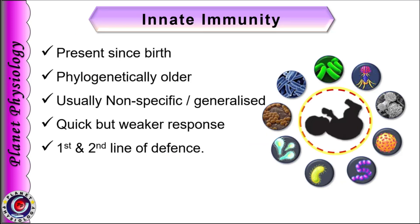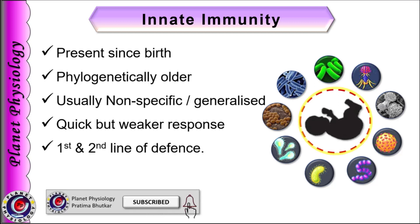Let us study about innate immunity in detail. Innate immunity is present since birth and it is phylogenetically older type of defense system, which is also found in plants, fungi, insects as well as primitive multicellular organisms. It is usually non-specific in nature, meaning it acts against all kinds of pathogens in a generalized manner. Innate immune response mechanisms act very quickly but the extent of response is comparatively weaker than that of acquired immunity. These mechanisms usually form the first and second line of defense against pathogens.